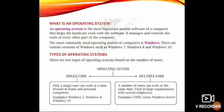The most commonly used operating system in computers is Windows. Windows 7, Windows 8, Windows 10, and Windows XP are operating systems. There are various versions available. The first is Windows XP, then Windows 7, then Windows 8, and the latest version is Windows 10.